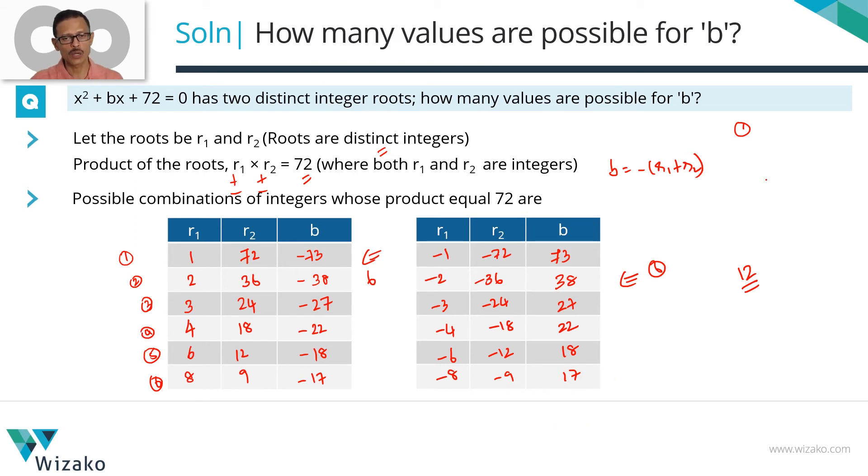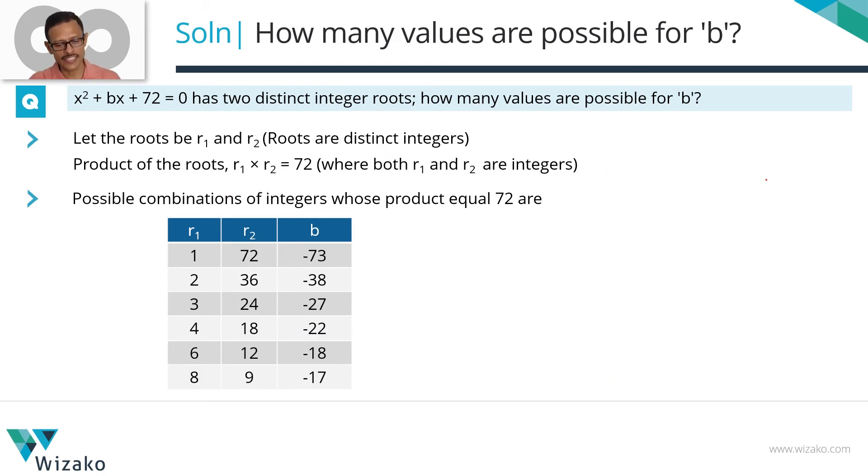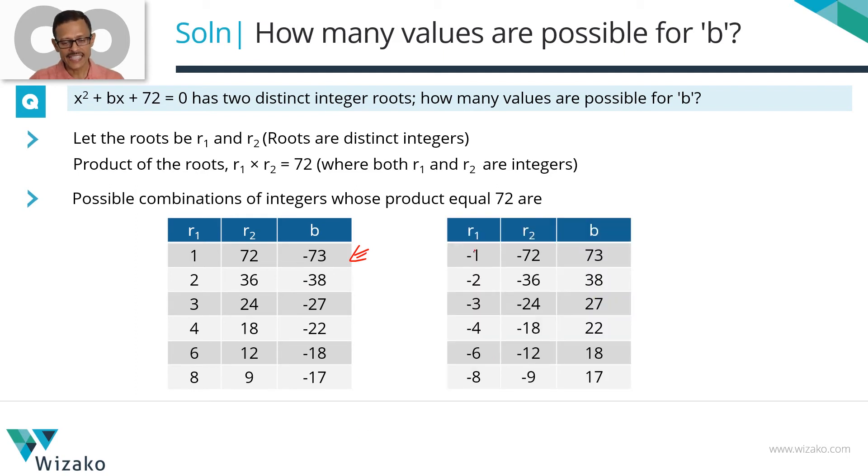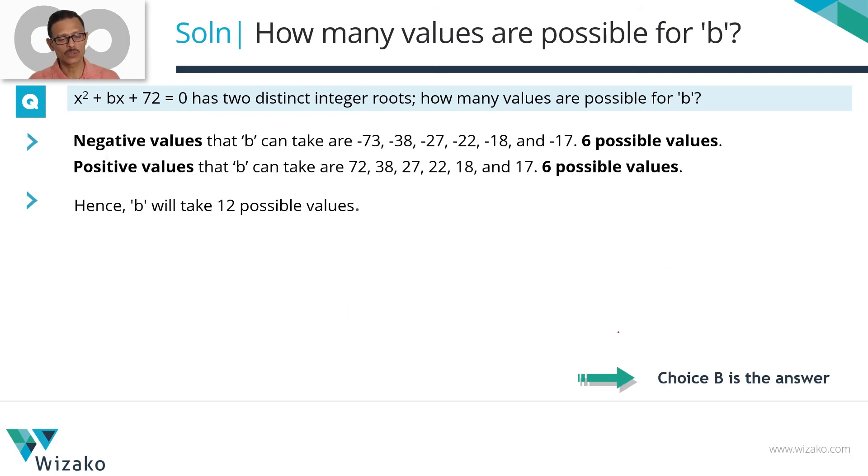Let's quickly summarize it in printed form to round up the first method, and then let us look at the second method. These are all the positive values that r1 and r2 can take and consequently these are all the negative values that b takes. These are all the negative values that r1 and r2 can take so that the product is a positive 72 and the corresponding values that b can take. Six in this table, six in the second table, adding up to a total of 12 possible values for b. Choice B is the correct answer. Method 1 done.